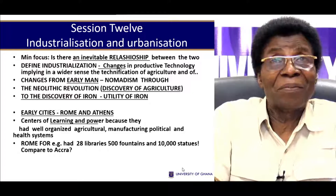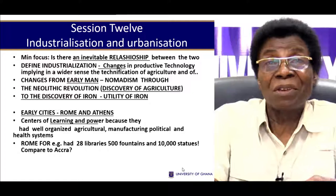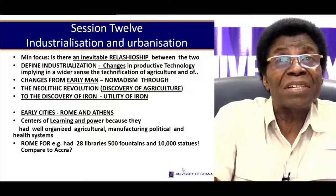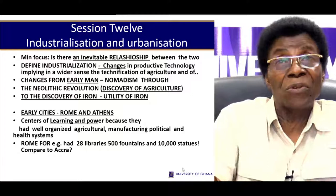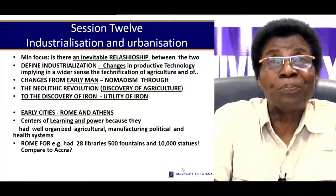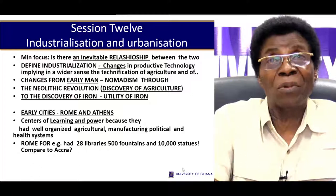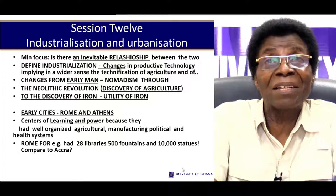Athens and Rome were able to survive as city-states because they had well-organized agriculture which was able to feed the people — without food, cities cannot survive. Additionally, they had manufacturing facilities which produced many goods for the survival of the people, as well as well-developed political systems. The emperors of Rome ensured law and order was maintained, the appointment of people to positions, and the assignment of power. So politically, Athens and Rome were very well-developed.